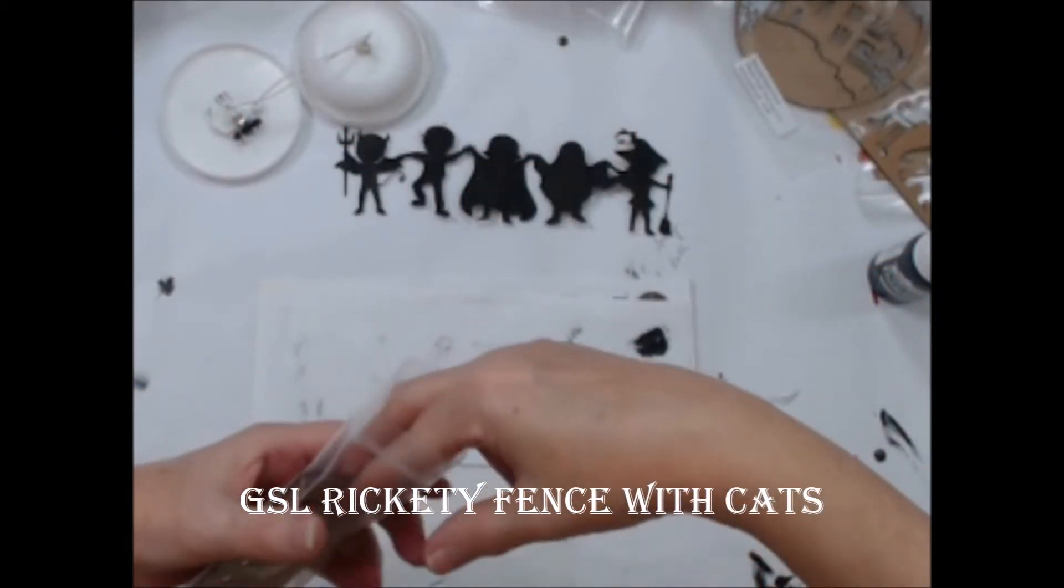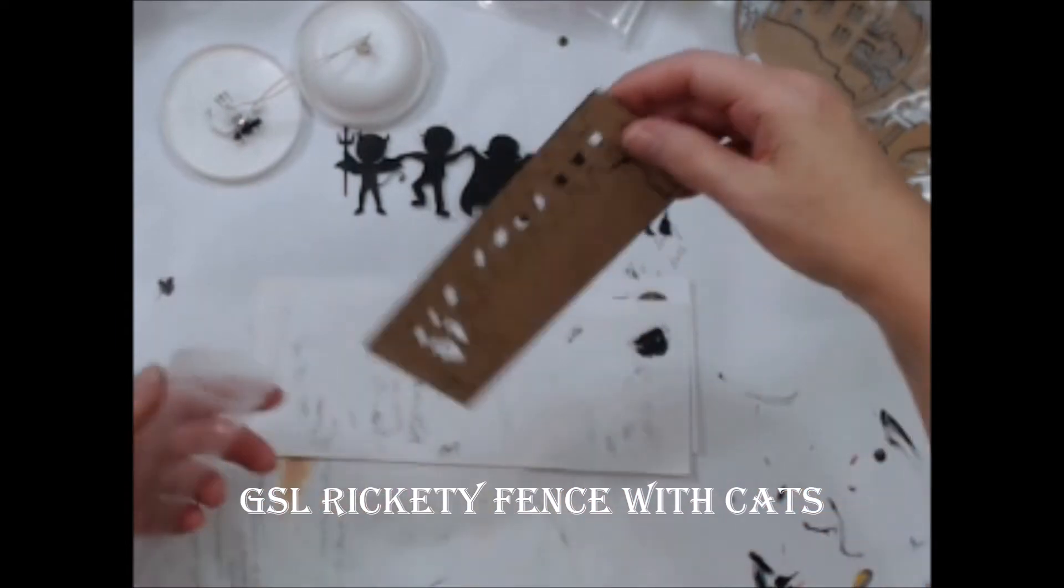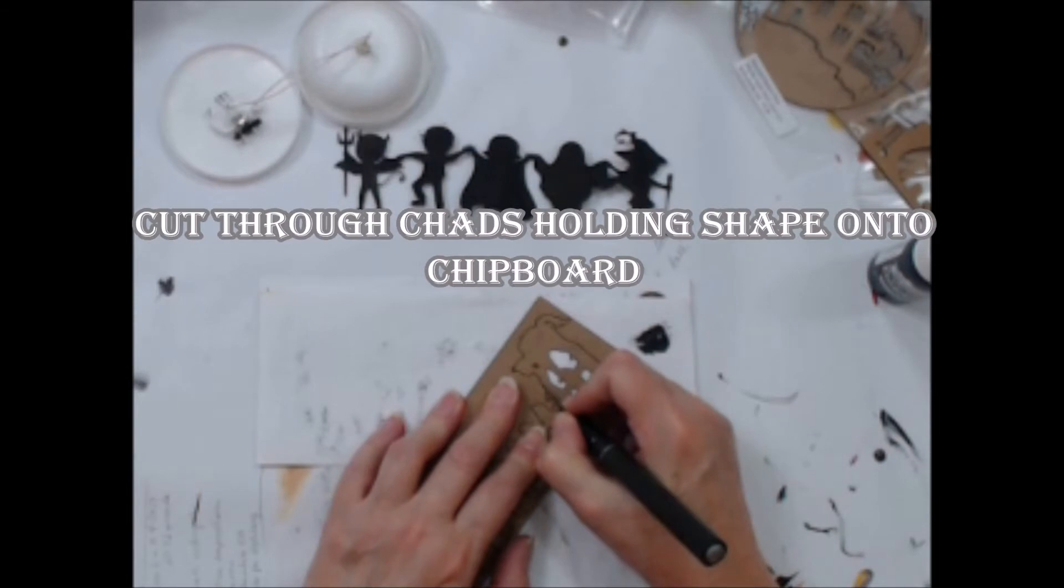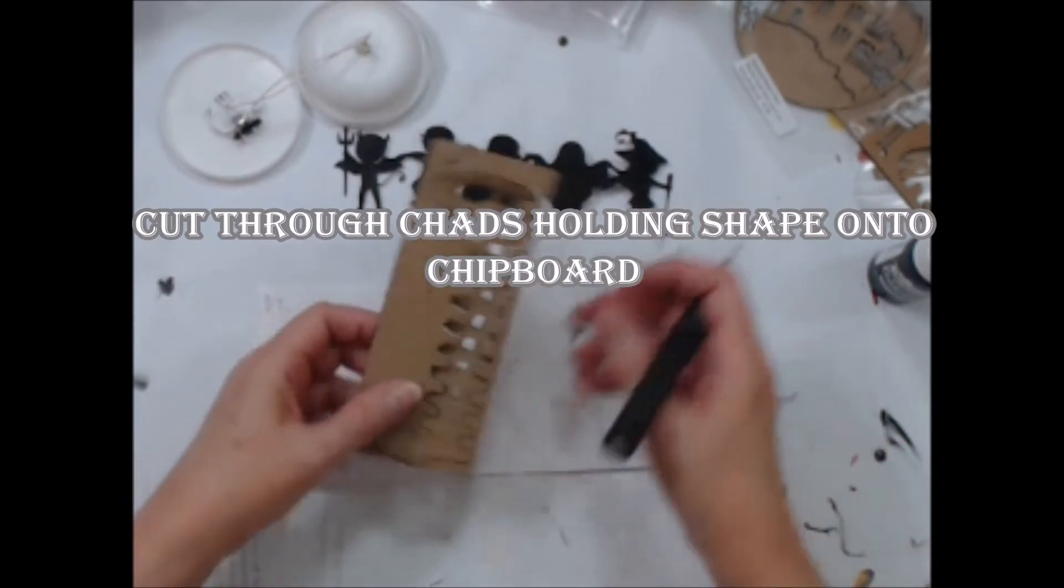So, I'll go ahead and paint the Gypsy Soul Rickety Fence with Cat's chipboard with the same black paint and I'll set this aside to dry. Use your craft knife to cut through the chads to release the shape easily.